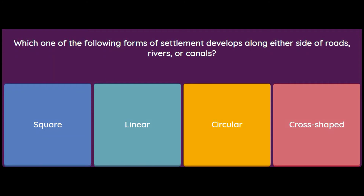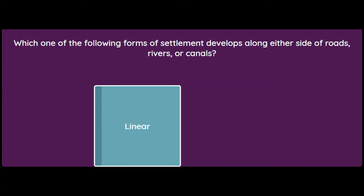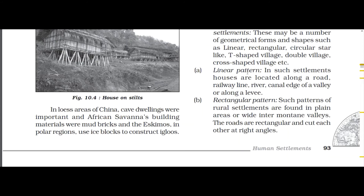Which form of settlement develops along either side of roads, rivers, or canals? Square, linear, circular, or cross-shaped? The answer is linear settlements. According to the book, in a linear pattern, houses are located along a road, railway line, river, canal, edge of a valley, or along a levee.